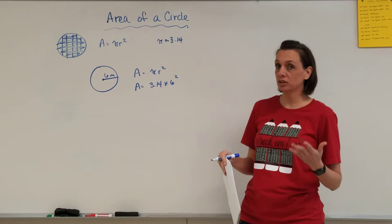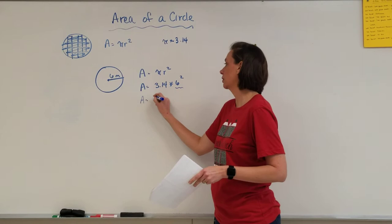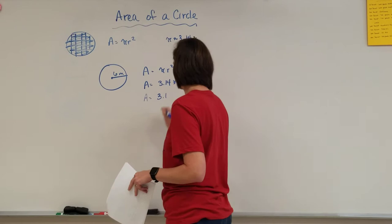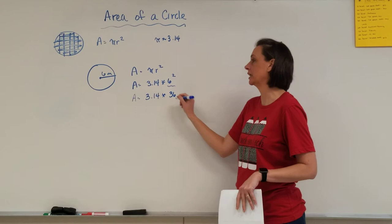So we think, okay, what is 6 squared? It means 6 times 6, not 6 times 2. So, 3.14 times - 6 times 6 is 36, not 6 times 2 is 12. Make sure you're squaring times itself.